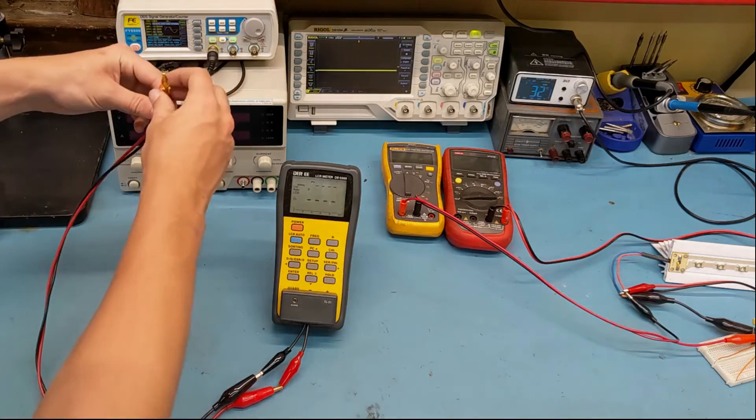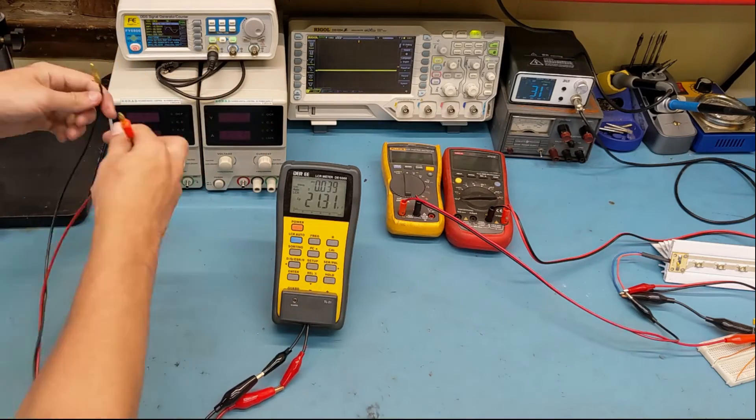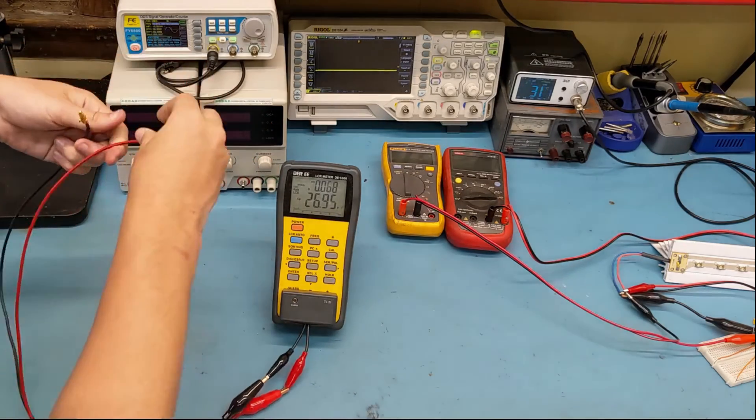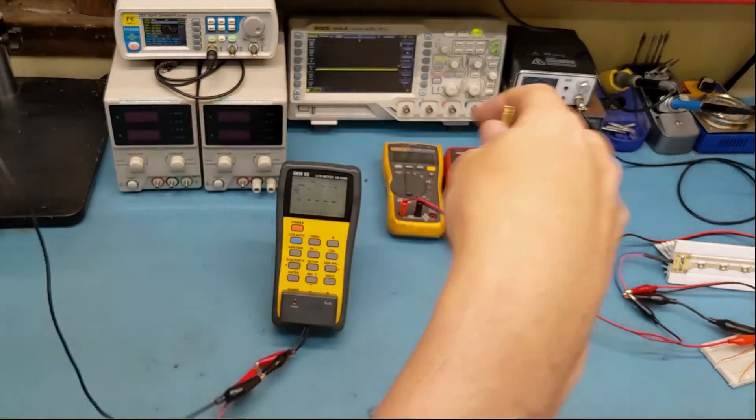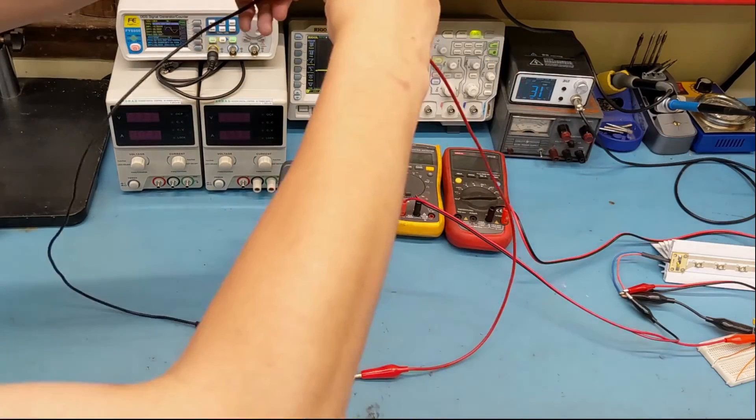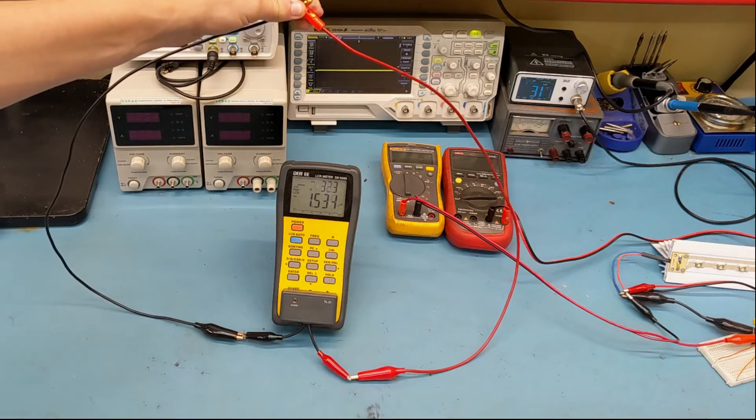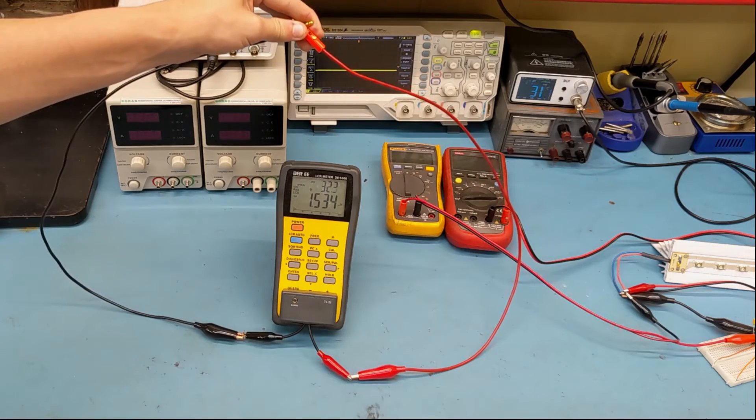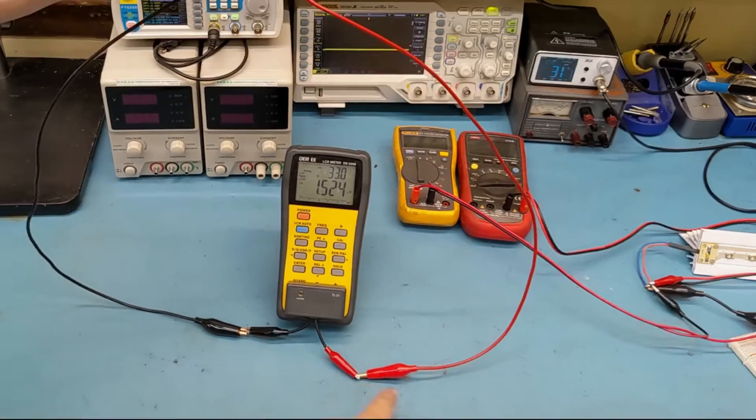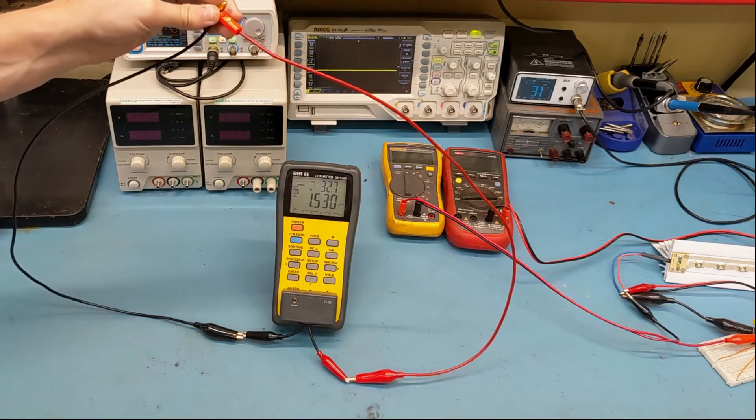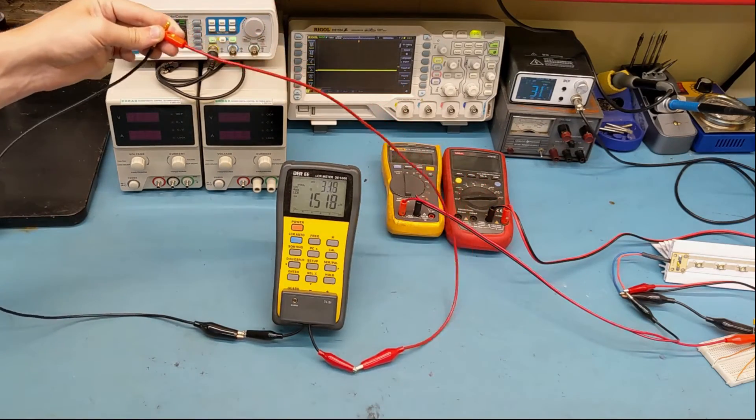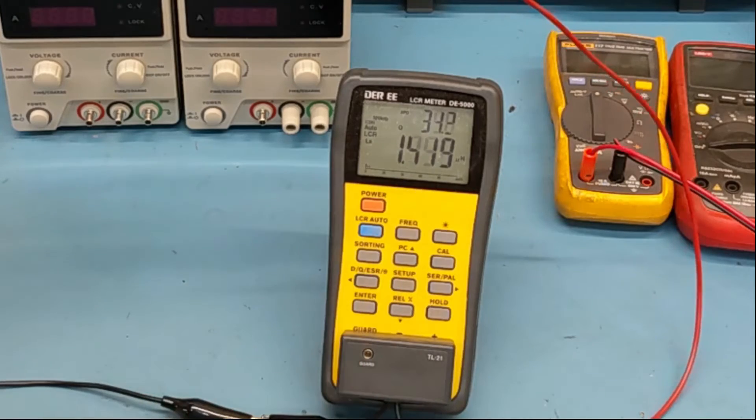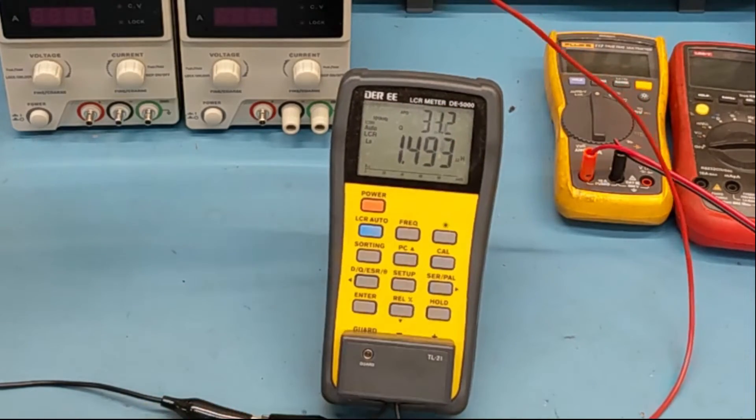So now I'm going to show you what happens if we have a larger loop area. So I'm going to untwist these wires, and I'm just going to try to do something crazy like this. And now we are measuring like three times the inductance. We have this huge, massive loop area now, this big magnetic loop here. And as a result of that, our inductance went up quite a lot. You'll see our Q factor also went up a little bit.